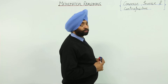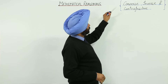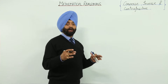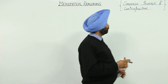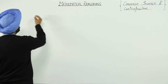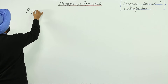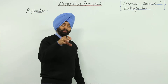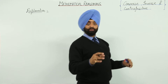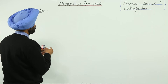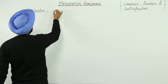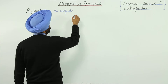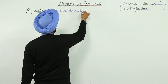The next important topic we are going to cover in mathematical reasoning is converse, inverse, and contrapositive. These three are very much correlated with the conditional statement. After explaining and briefing, we will go through individually what is converse, what is inverse, and what is contrapositive.